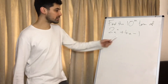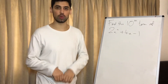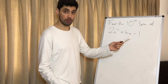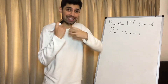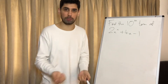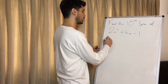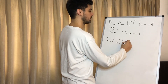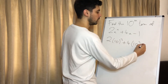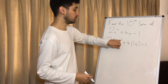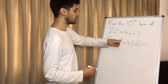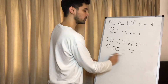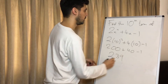Finding the 10th term of this sequence just requires some relatively simple algebraic substitution. When dealing with the nth term and they ask for the 10th term, we literally replace n with 10. So this is going to be 2 times (10) squared plus 4 times (10) minus 1. Always substitute in brackets — you're less likely to make mistakes. The power comes before the multiplication: 10 squared is 100, times 2 is 200, plus 40, minus 1 — that gives 239 as the 10th term.